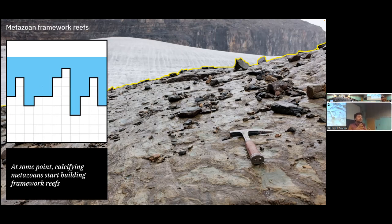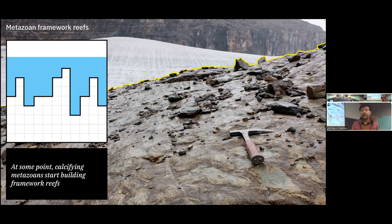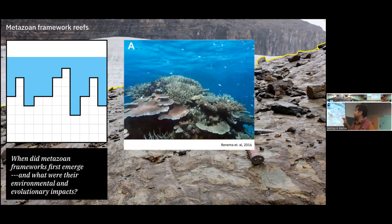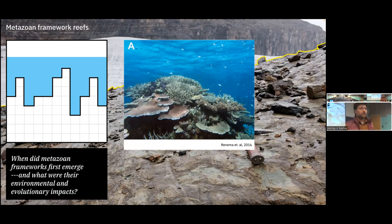At some point in Earth's history, animals started building calcified shells and fusing those shells together to produce rigid frameworks. These rigid frameworks are very different from microbial reefs — they have high topographic relief, can grow where microbes can't, and have structural complexity. I'm interested in understanding when metazoan framework reefs first emerged on our planet and what the environmental and evolutionary impacts were. Modern coral reefs' nooks and crannies lead to increased biodiversity, so when metazoan framework reefs first emerged, they may have lit the fuse for further diversification.